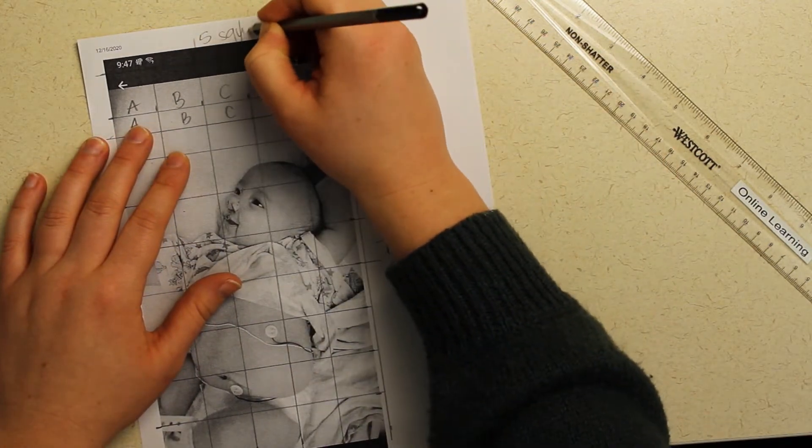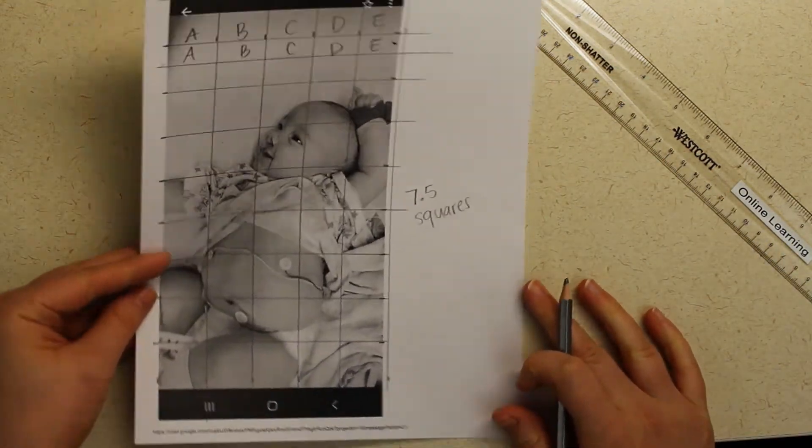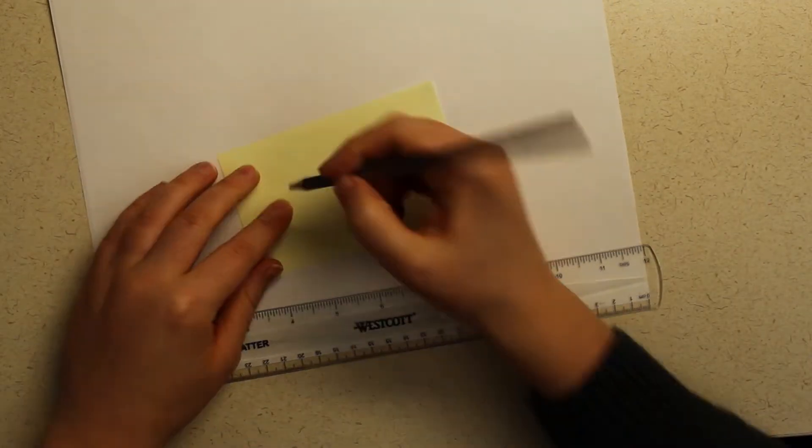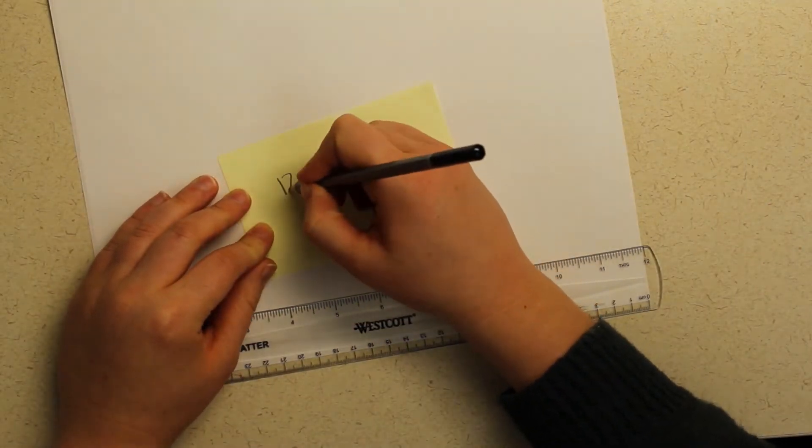This is the part that requires a little bit of math. I know that I want my drawing to have the same number of squares across as my image has and the same number of squares up and down as my image has.